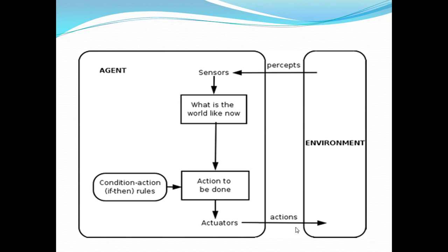Now let's see an example with this diagram, which shows that an agent gets information through percepts and then performs actions on the environment through actuators. Let's say we have a room as the environment — a dirty room with dust here and there. Our intelligent agent is a vacuum cleaner. When it perceives its environment, it will see where the dust is through sensors and cameras.